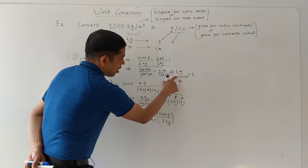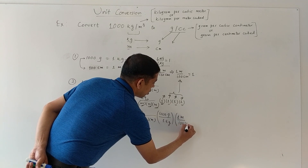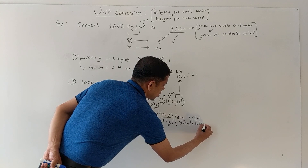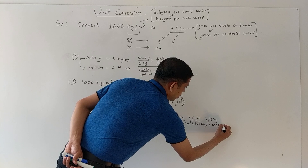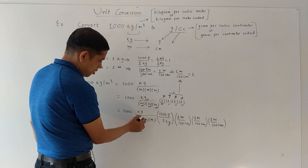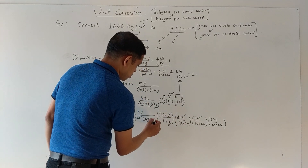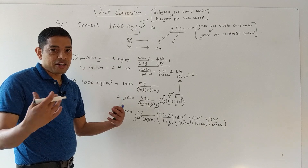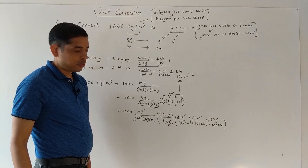Because we have three ones, we write this three times: one meter over 100 centimeter, one meter over 100 centimeter, one meter over 100 centimeter. Now the three meters on top cancel with the three meters on the bottom, and kilogram cancels with kilogram. All units are cancelled out.